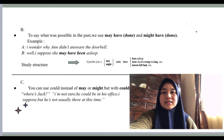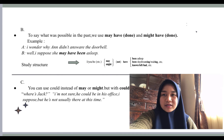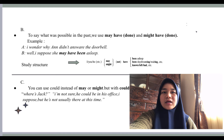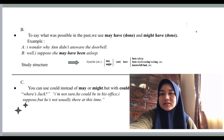You can use 'could' instead of 'may' or 'might,' but with 'could' the possibility is smaller. For example: 'Where is Jack? I'm not sure — he could be in his office, I suppose, but he's not usually there at this time.' This means the possibility of Jack being in his office is smaller.